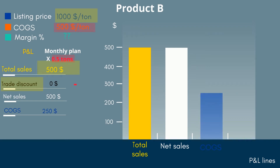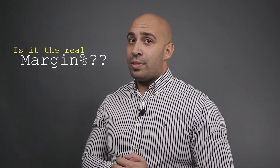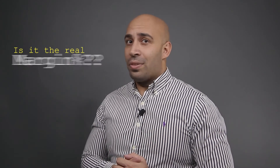The fourth line is the COGS — cost of goods sold — which is $250 dollars. The last line is the profit, which is net sales minus cost of goods sold: $250 US dollar. Finally, the margin of product B is equal to profit over net sales, which is a 50% margin. But do you think this is the real margin? I don't think so.